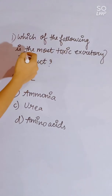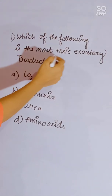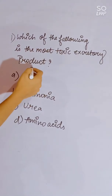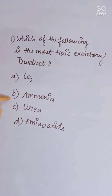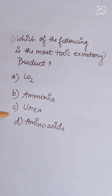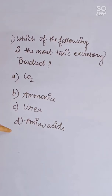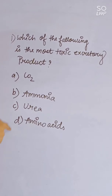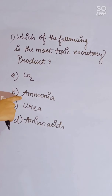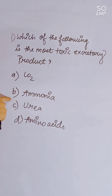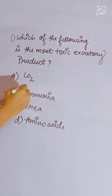Which of the following is the most toxic excretory product? Options: CO2, ammonia, urea, or amino acid. Ammonia is the most toxic excretory product. Correct answer is B.